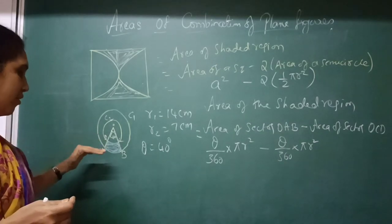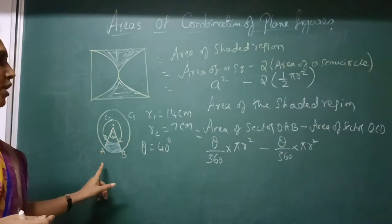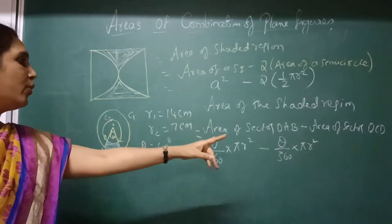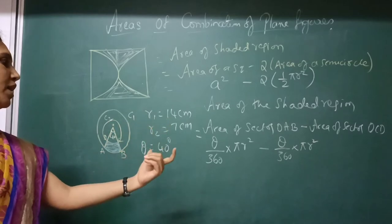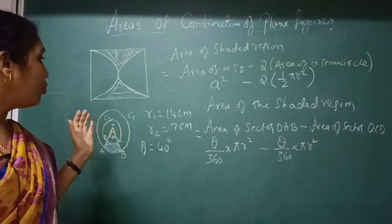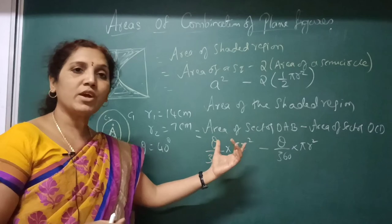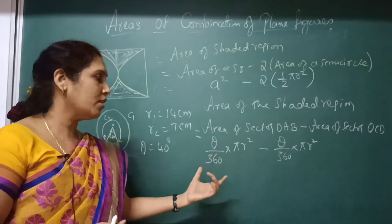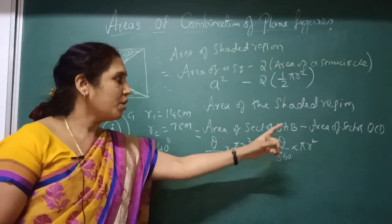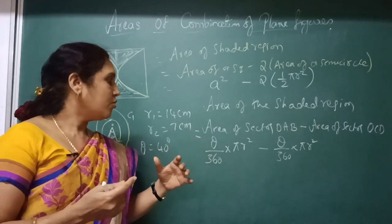Area of shaded region is equal to area of this big sector, area of sector OAP minus area of this smaller sector, OCD. So if you are going to subtract these two sectors, you will get the area of shaded region. So we have discussed in the previous exercises what is the formula to find area of a sector and everything. So we will write down the formula: theta by 360 into pi r square and minus for this also the same thing. We will just substitute the value and get the answer.